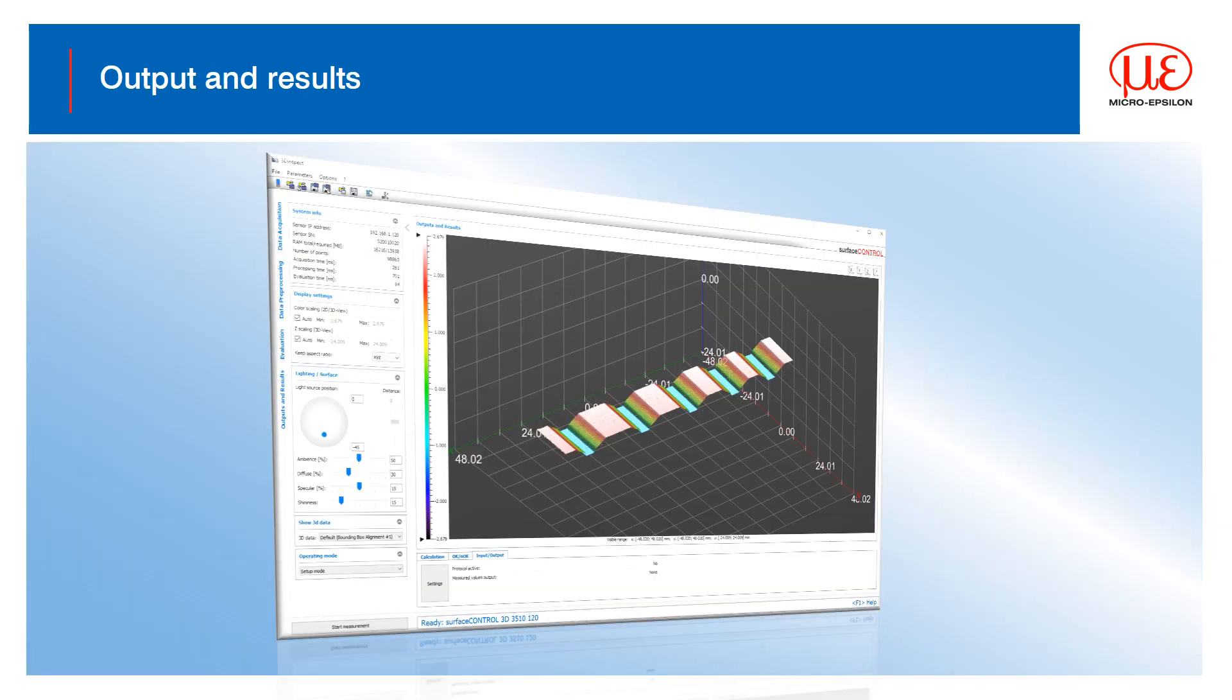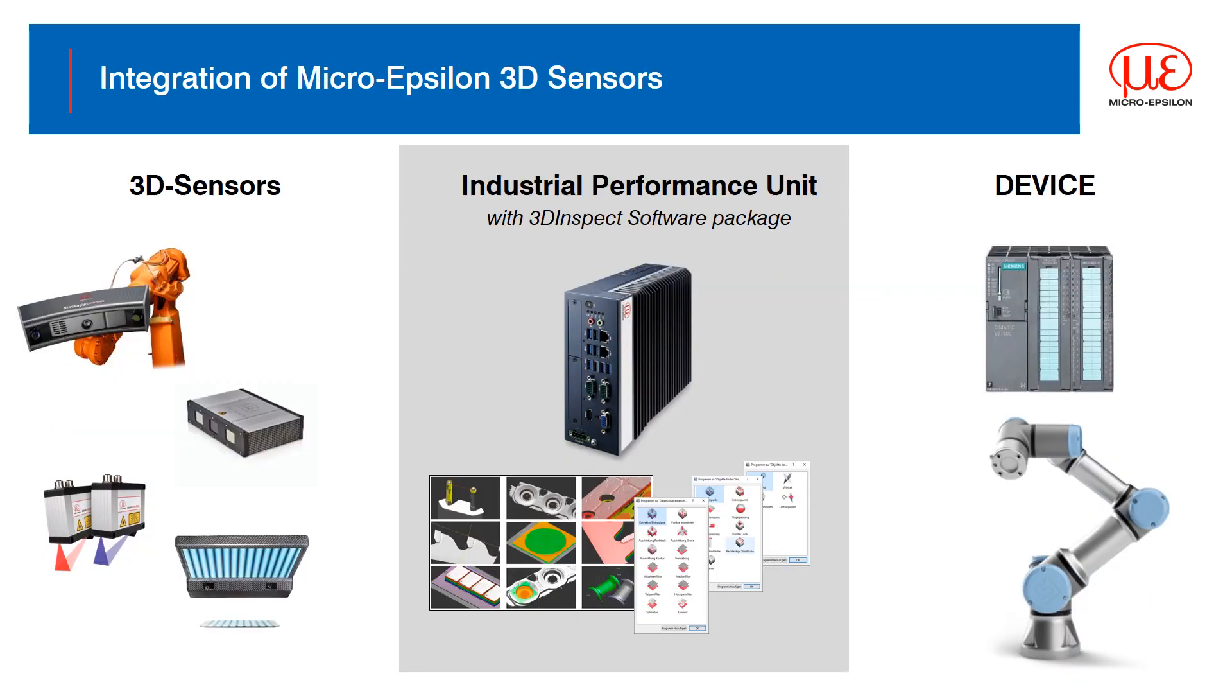Your final step in the setup is the consideration of what to do with the measurement and inspection data that you have just created. Are you looking to get pass-fail signals? Do you want the data output directly to your system? 3D inspect has options for both. Processing 3D point clouds and evaluations is intensive. Our 3D sensors are communicating with Genicam and GigE Vision to a PC. And whilst 3D inspect is designed to run on a normal PC, we do offer our own industrial performance unit that can run 3D inspect and also provides gateway options for communication to your own device through industrial field bus networks.